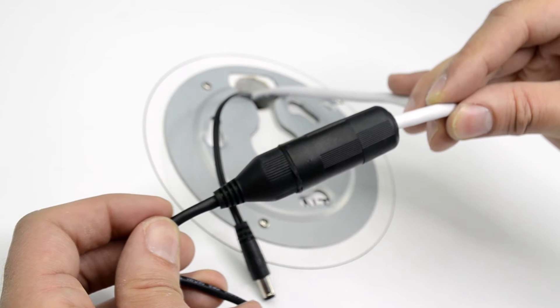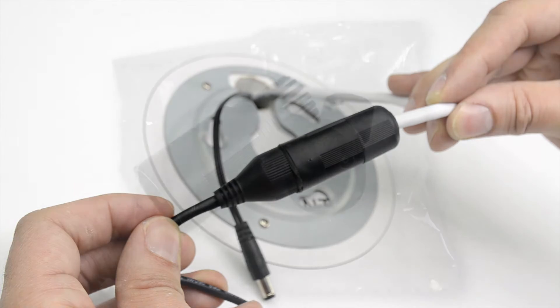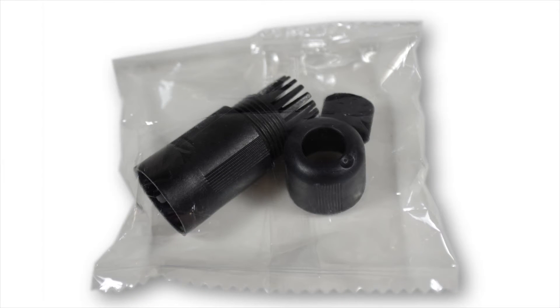This cover ensures water or debris do not penetrate your ethernet connection when your camera is fully assembled. The weatherproof cover comes in the box with your camera.